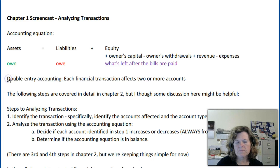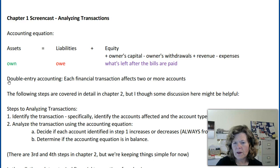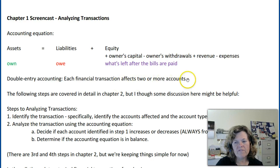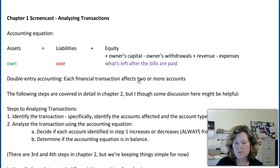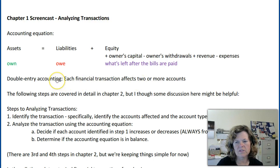In the accounting system we're going to work with in this class and subsequent accounting classes, we'll be using a double-entry accounting system. What that means is for each financial transaction it will affect two or more accounts. We might have three or four accounts affected, but we'll always have at least two. You can't record a financial transaction into our accounting system with just one account — it has to have at least two or more.